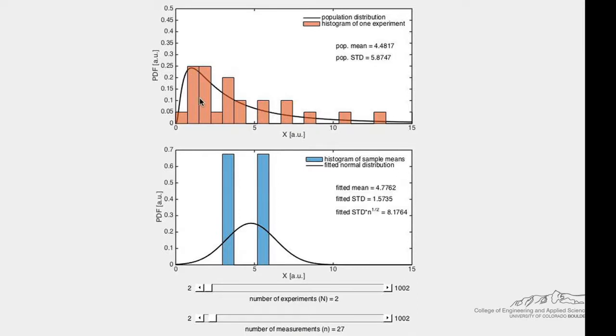Now let's run an experiment where we measure this variable 27 times. In this experiment, there are 27 measurements. If we plot a histogram of these measurements shown in red in the top plot, the shape is similar to the population distribution as we would expect.